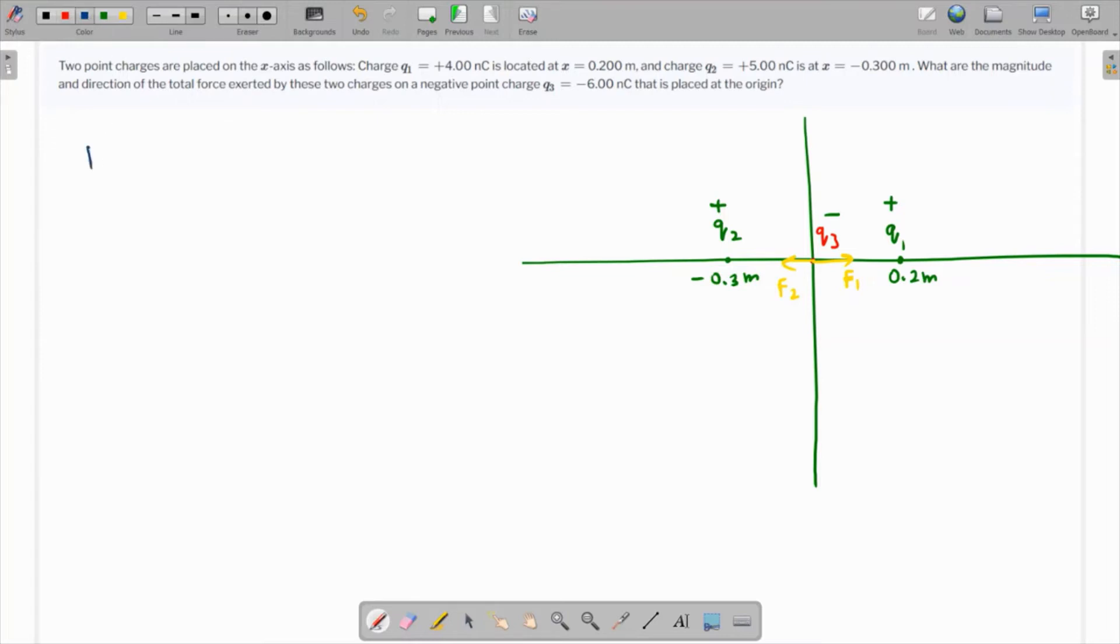This can be easily found out. The value of F1 is going to be k q1 q3 over 0.2 squared, so k is nine times or let's keep it k.